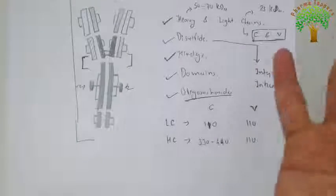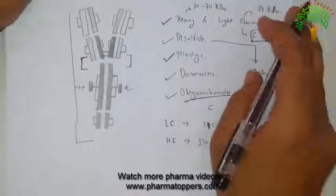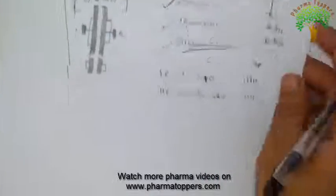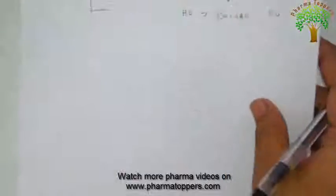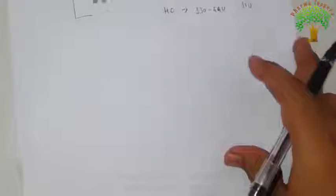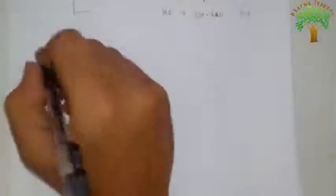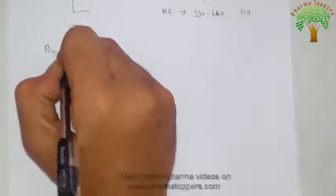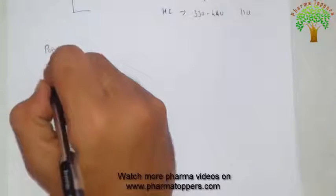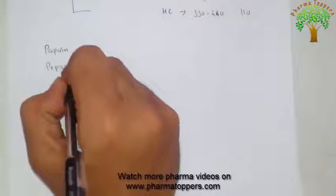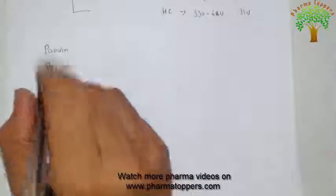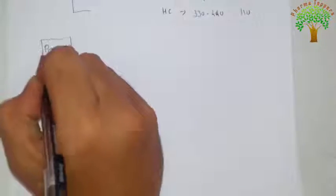Next I am going to show you how immunoglobulin gets fragmented — what the fragments are. There are basically two enzymes used: one is papain and another one is pepsin.